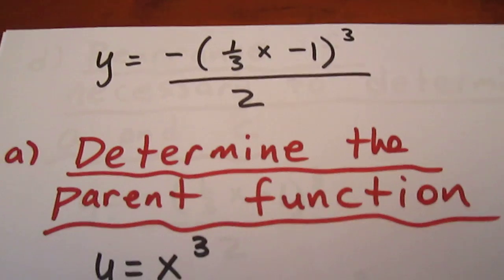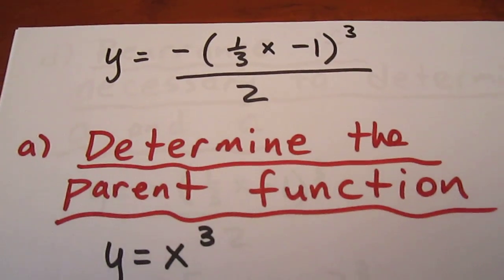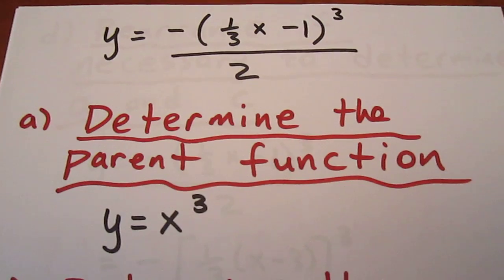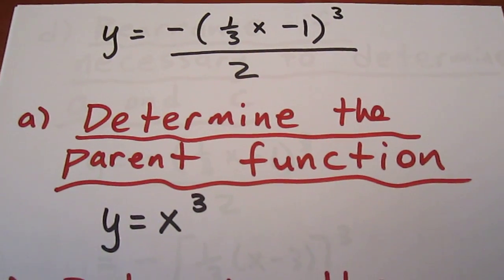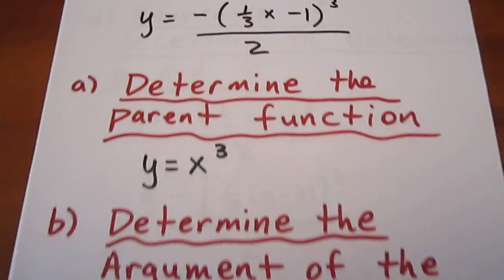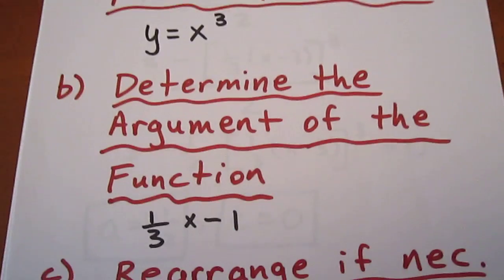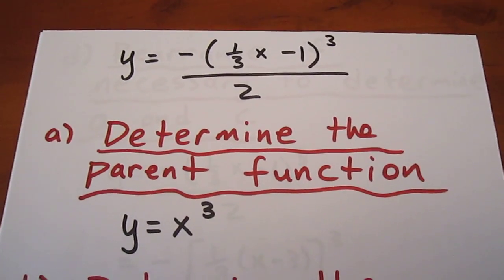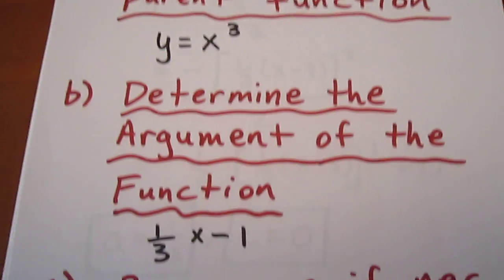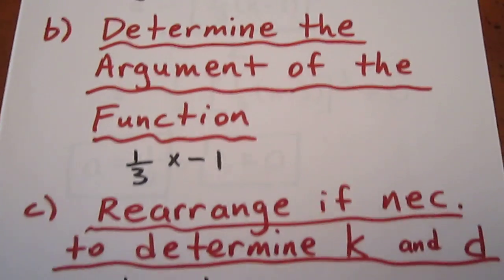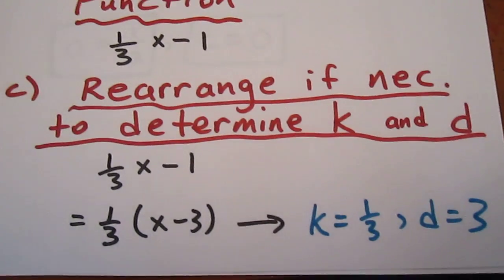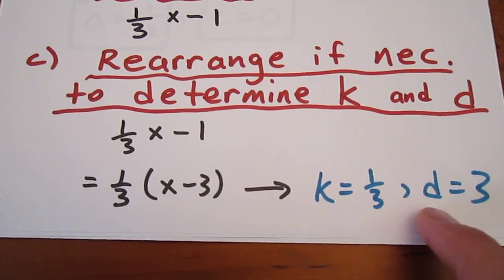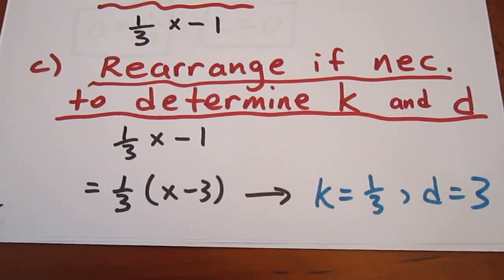The first thing we need to do is ask ourselves: what is the parent function? In this case, the parent function is y equals x cubed — the argument is being cubed. The argument is one-third x minus 1; that's the quantity being cubed. We can rearrange this if necessary to determine the values of k and d. When we do that, we get a k value of one-third and a d value of three.